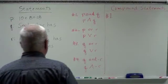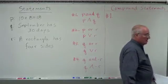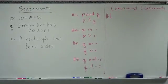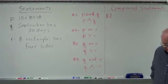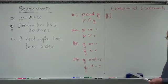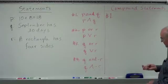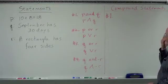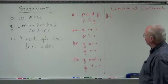Let's do some sample problems. This is a practice problem on page 14 of the study guide and intervention. It says write a compound statement for each conjunction and disjunction, then find its truth value. We're going to write the compound sentences and then come back and do truth tables with it.